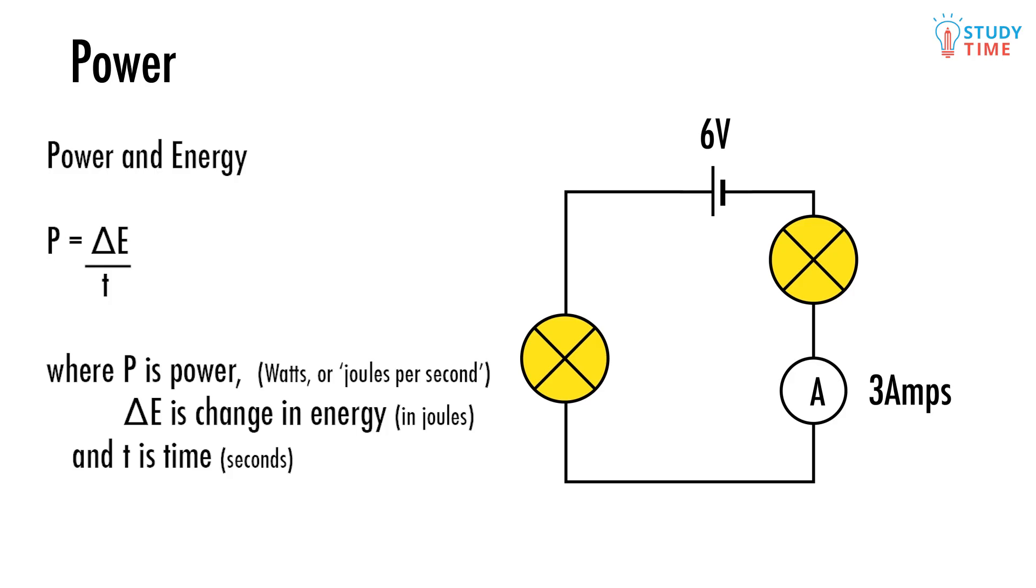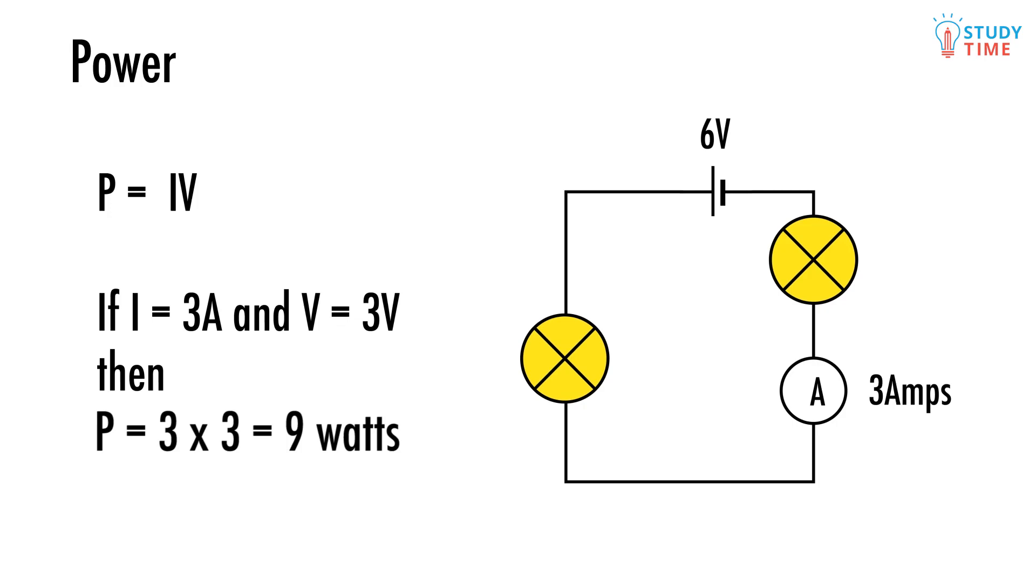This formula is P equals IV where P is the power of a component measured in watts after James Watt, the Scottish engineer who figured this all out. Here's an interesting equation. What will the power of each of the light bulbs be in the following series circuit? Well the ammeter tells us that the current at one point is going to be three amps. Because this is a series circuit we can also say that the current is going to be three amps everywhere. We've been told that the voltage across the battery is six volts. If the bulbs are identical then they will each take three of these overall six volts. Therefore in each bulb we get power equals current times voltage which is equal to three times three which is nine watts.